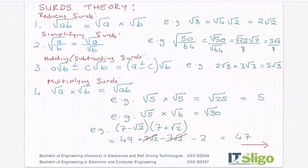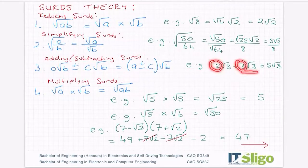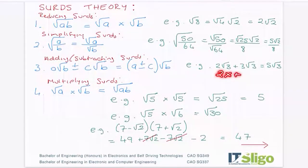Adding or subtracting surds: if you have A root B and you are adding or subtracting C root B from it, you literally just add or subtract the numbers on the outside, and it's that many root Bs. So for example, if you have 2 root 3 plus 3 root 3, then that is the same as 5 root 3 — just the same as 2x plus 3x would give you 5x.